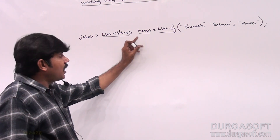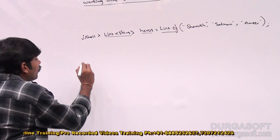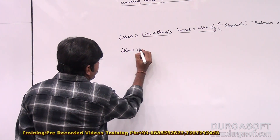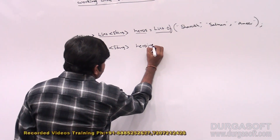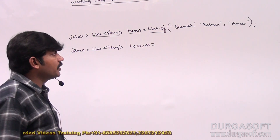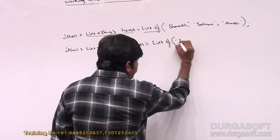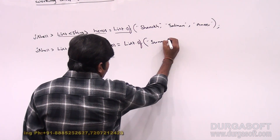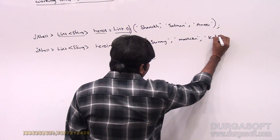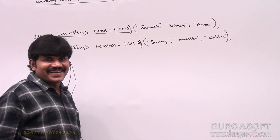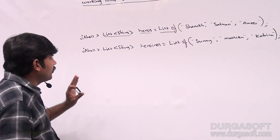I'm creating one list variable — not a primitive type like int x or String s. Now I want to take one more variable: List<String> heroines = List.of(). For heroines I'm taking names like Sannie, Malika, and Kathirna. So now lists of heroes and heroines are ready.